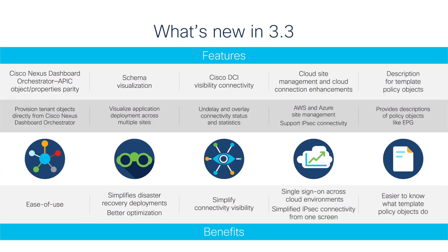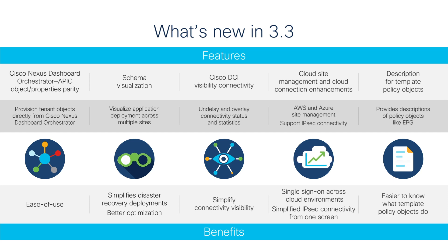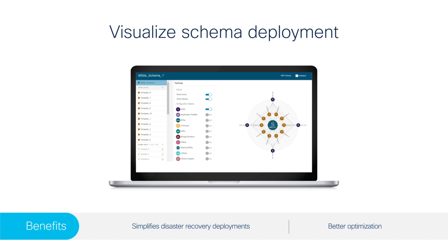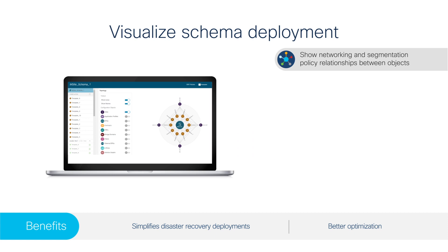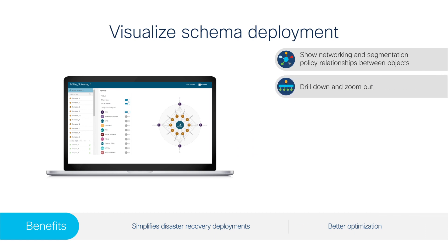Additional innovations in version 3.3 include the ability to provision tenant objects directly from Cisco Nexus Dashboard Orchestrator for ease of use. Cisco Nexus Dashboard Orchestrator 3.3 lets you visualize schema deployment to show networking and segmentation policy relationships between objects with drill-down and zoom-out views.